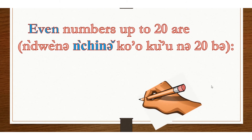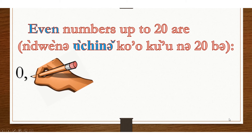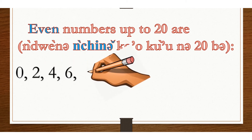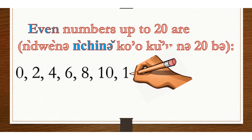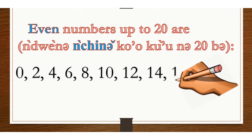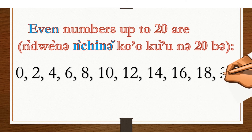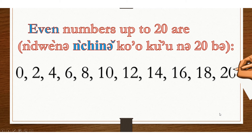Even numbers up to 20 are: 0, 2, 4, 6, 8, 10, 12, 14, 16, 18, 20.